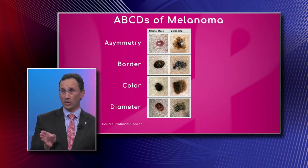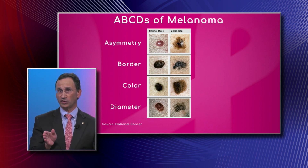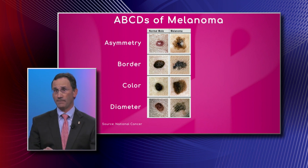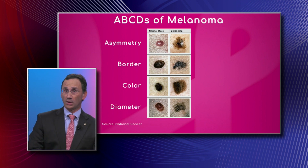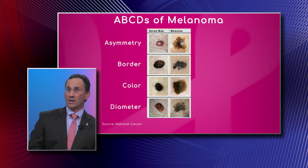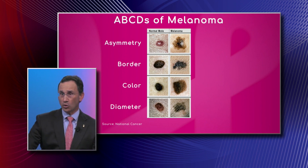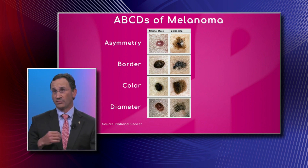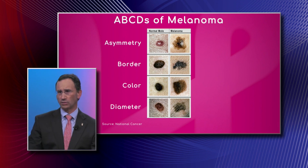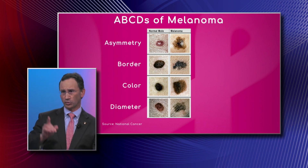If you divide the mole on the left hand side in half, one half is the same as the other. That's not the case for the melanoma on the second picture. The B stands for border — a very uniform border for normal moles, and an irregular border for melanomas. C is for coloration — even, plain coloration for normal moles, and for melanoma you see uneven coloration, really dark pigmentation, like on the second melanoma picture from top to bottom.